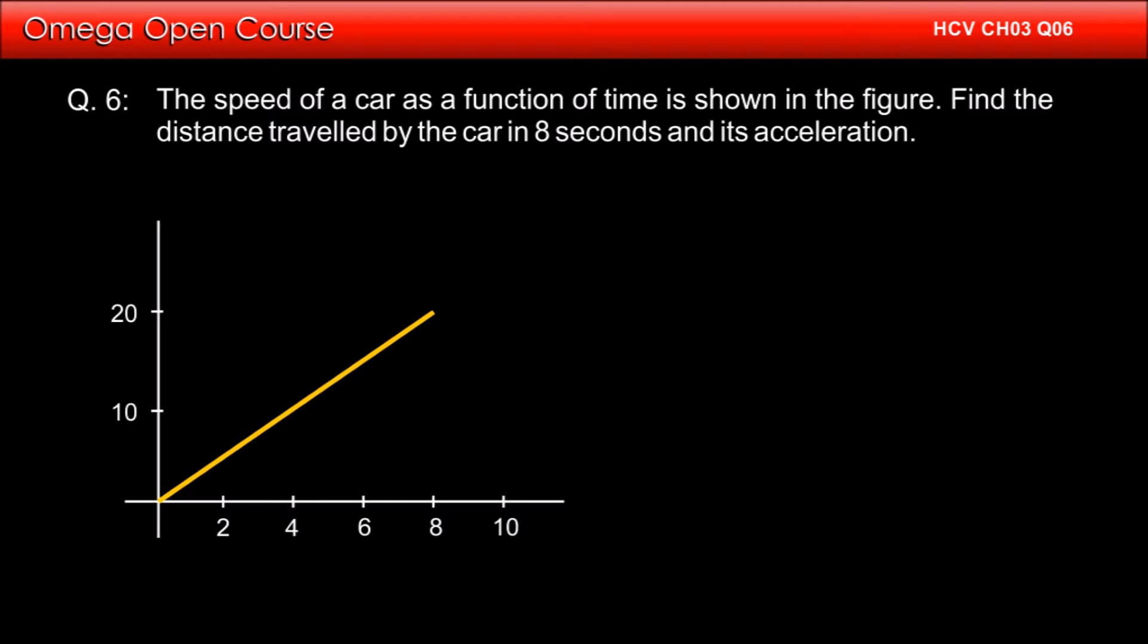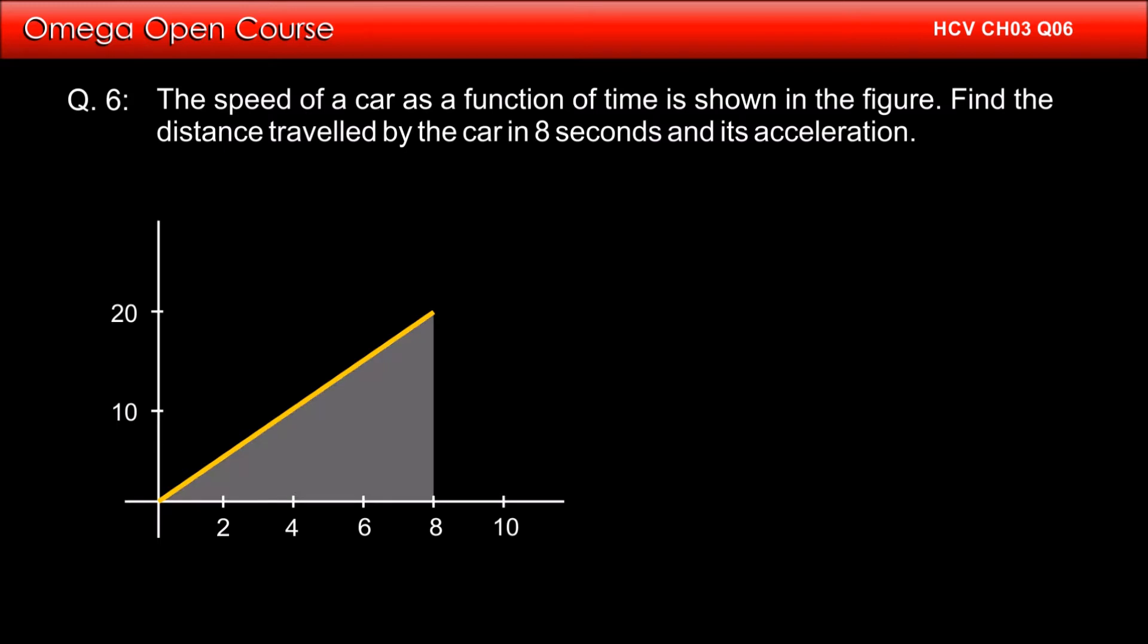The distance travelled is equal to the area under the speed time graph. Therefore the distance travelled is equal to the area of this triangle. As the area of triangle is given by half into base into height, the distance travelled is half into 8 into 20, that is 80 meters. This is the answer to the first part of the question.